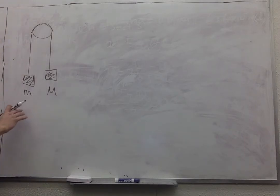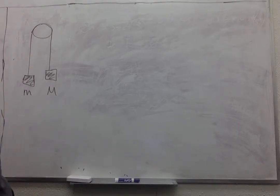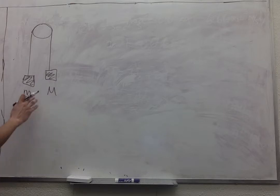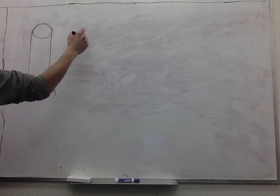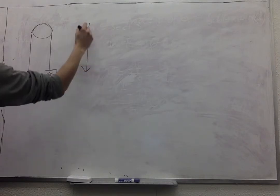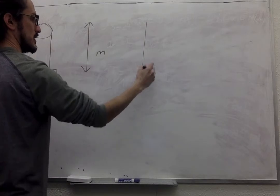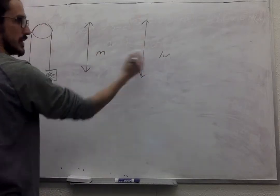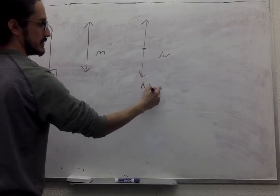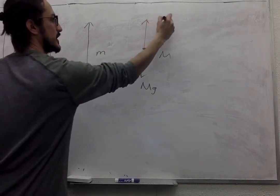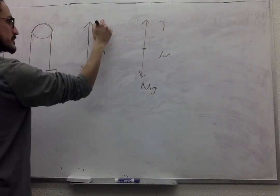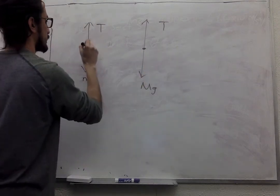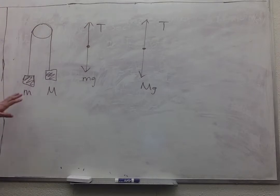You have to see which forces are acting on each one. So essentially this is asking you for a free body diagram. So for both M and capital M, little m, big M, you're going to have mg pulling down and tension pulling up. So those are the free body diagrams of the two masses.